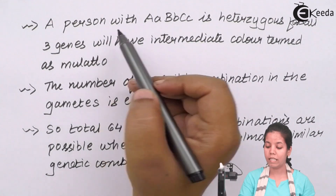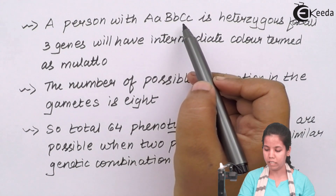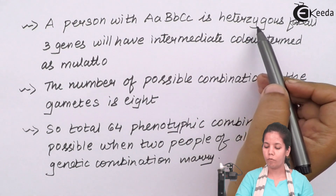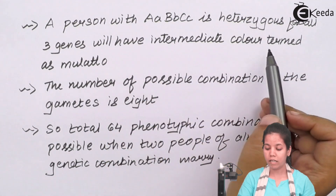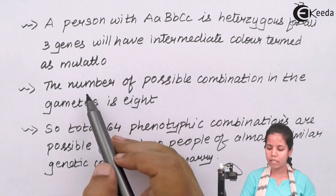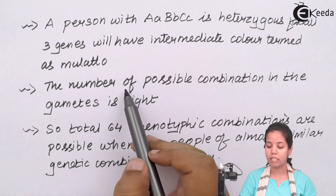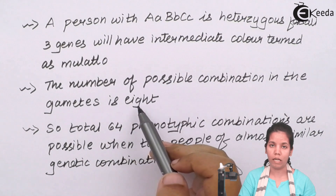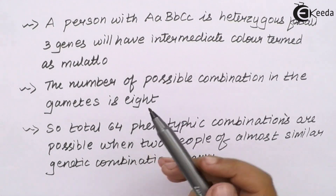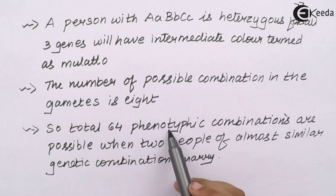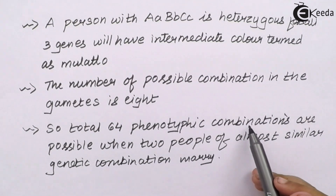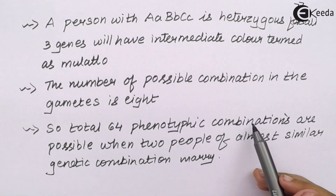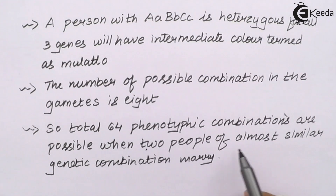A person with a heterozygous set of alleles for all three genes will have an intermediate colour termed as mulatto. The number of possible combinations in gametes is a total of 8. In totality, there are 64 phenotypic combinations, meaning 64 colour variations in skin colour can be observed in human beings when two people of almost similar genetic makeup marry each other.